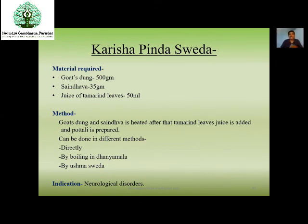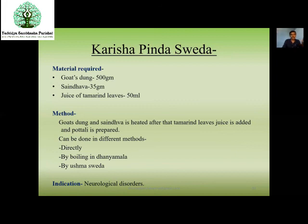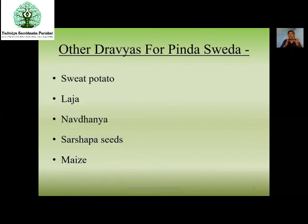Karisha Pinda Sveda: as mentioned before for Ruksha Pinda Sveda modifications, in place of sand we can use Karisha (Goat's Dung), Saindava, and some tamarind leaves. Heat the Goat's Dung and Saindava, add tamarind leaves, and when the consistency becomes slightly dry or solid, take out, make a Potali. Can be applied directly with Dhanayamla dipping method or by steam method. Indicated mainly in neurological disorders. Other Dravyas that can be used for Pinda Svedas include sweet potatoes, Laja, Navadhanyas, Sarsapa seeds, or maize seeds.